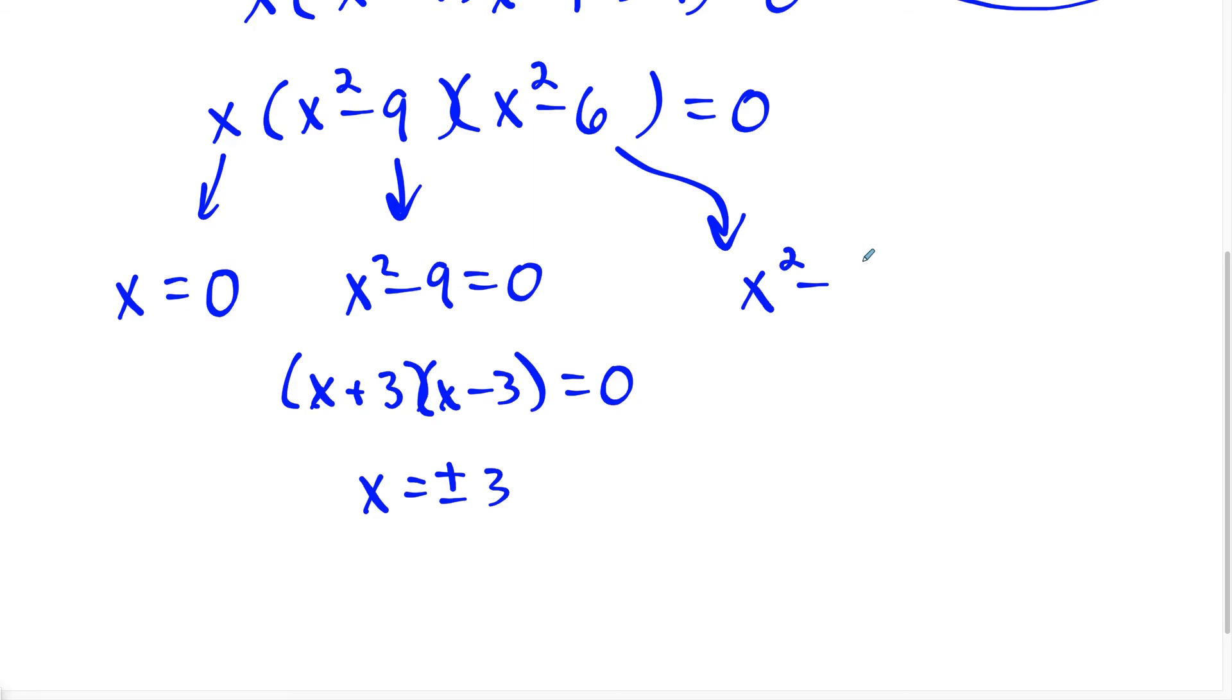And for the last factor, x squared minus six is equal to zero. This one, if you know the answer is just going to be x equals plus or minus square root six, it's great if you could do that math in your head. But if I add the six to the other side, I get x squared equals six.